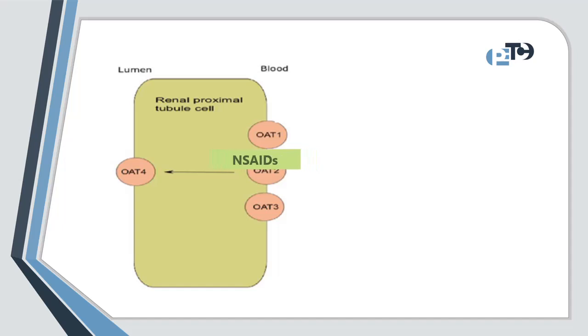They are also substrates for the same organic anion transporter that probenecid inhibits. When probenecid is administered with NSAIDs, it can compete for the organic anion transporter, leading to reduced clearance of NSAIDs.